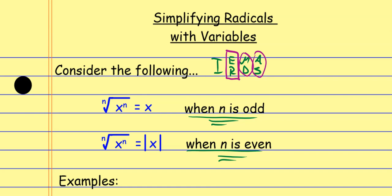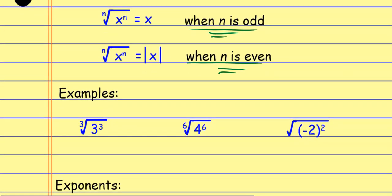We don't know if x is going to be positive or negative, that's why it needs absolute value. Looking at this from the perspective of numbers: the cube root and the third power cancel, so the value is three. The sixth root and sixth power cancel, so this is four. And the square root and second power cancel, so this is negative two. But one of these ends up being incorrect.